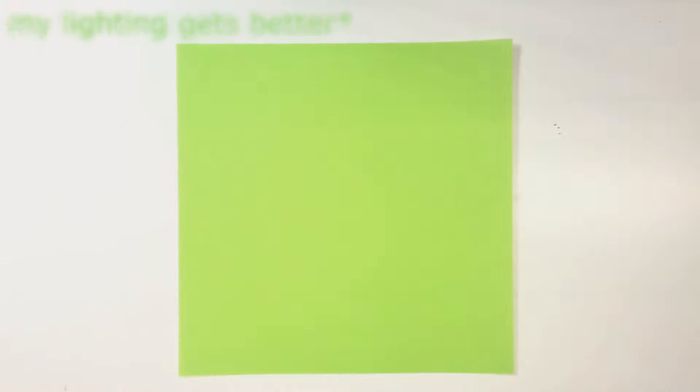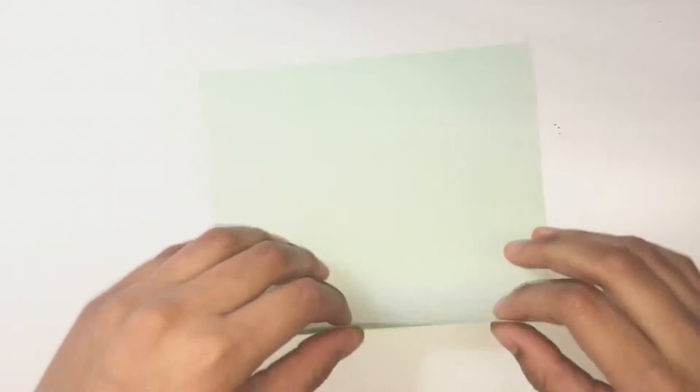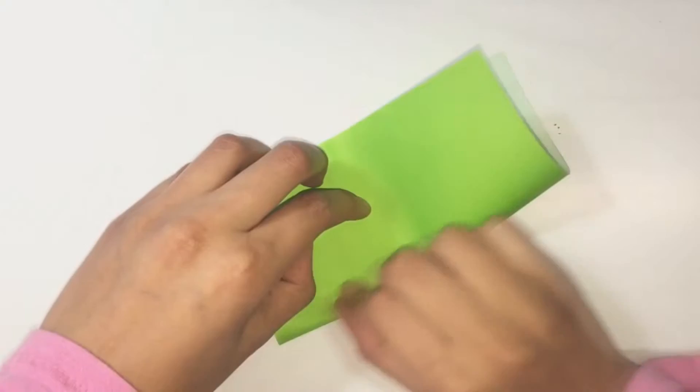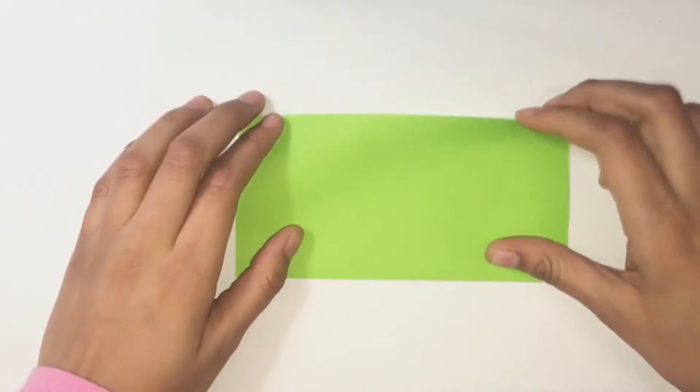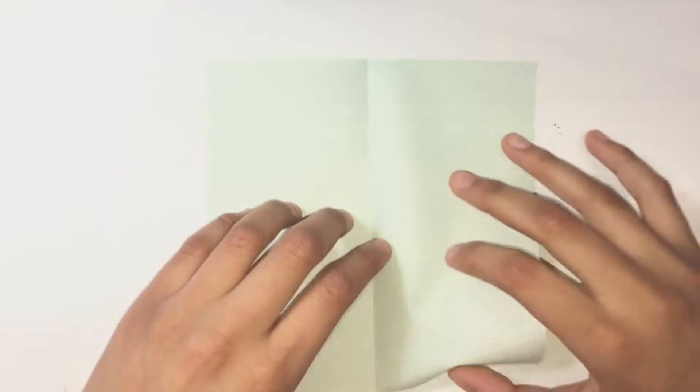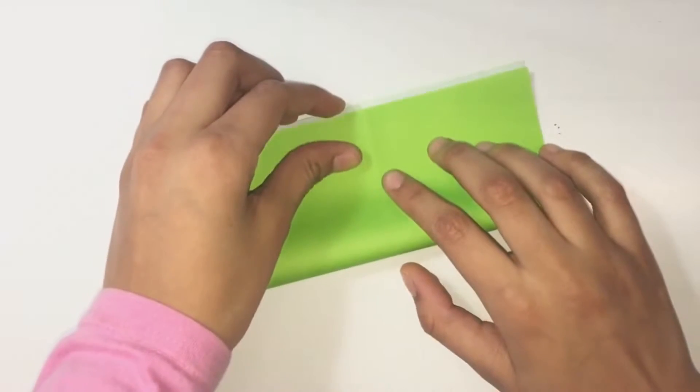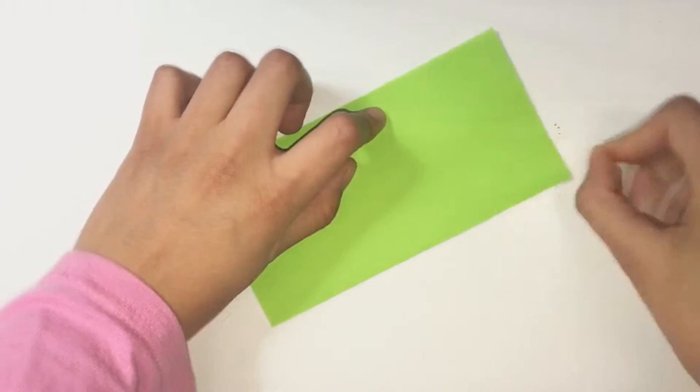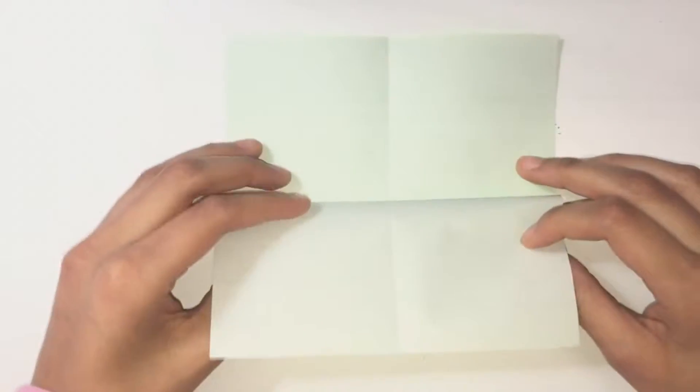The first thing we're going to do is make a square base. So turn the paper so that the right side is facing up and then fold it in half. Then we're going to unfold, turn it sideways and fold it in half the other way and unfold again.